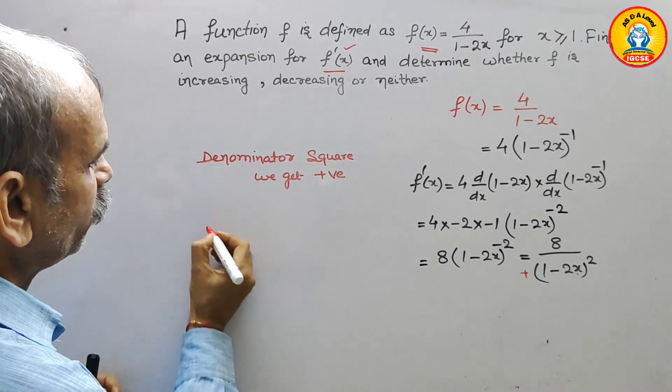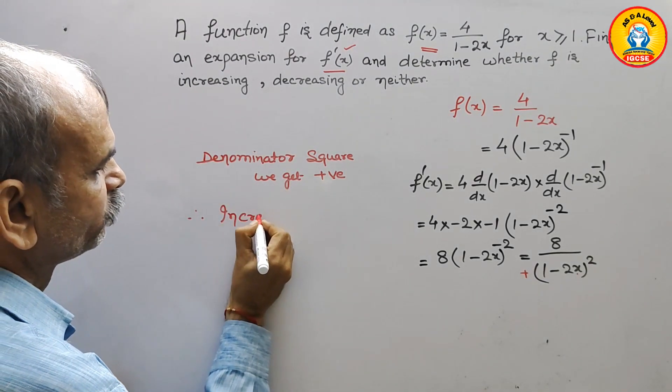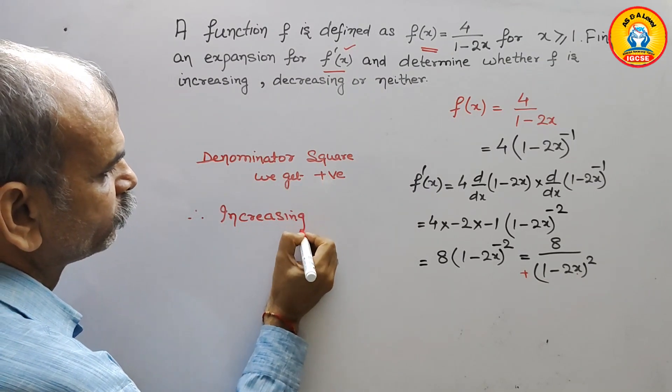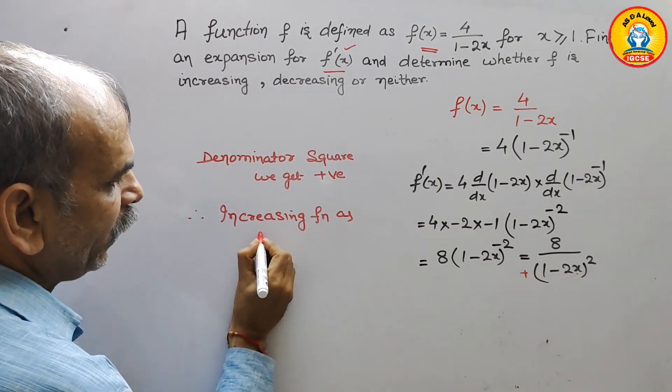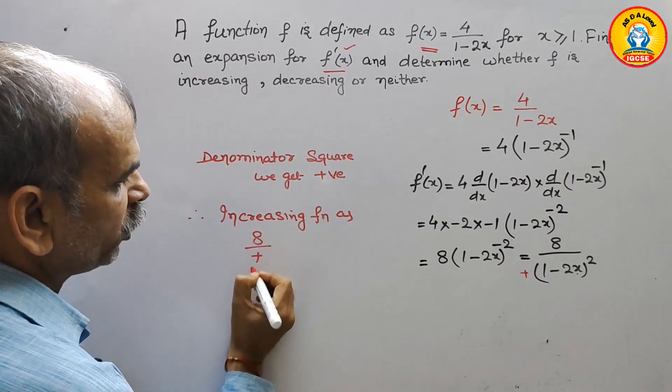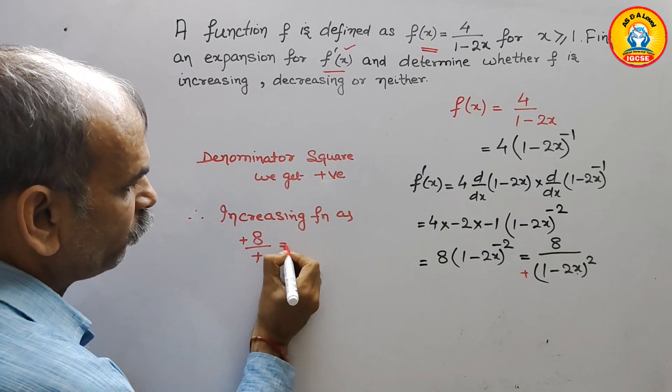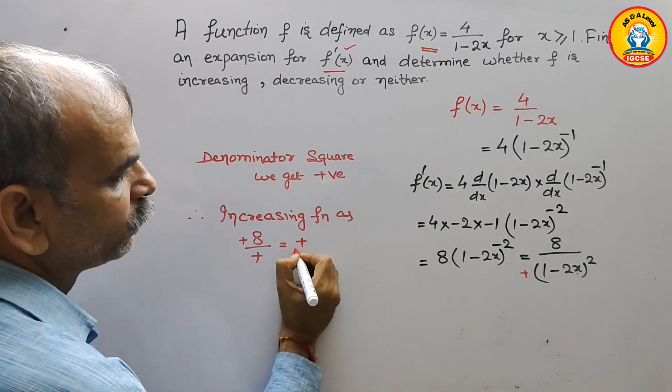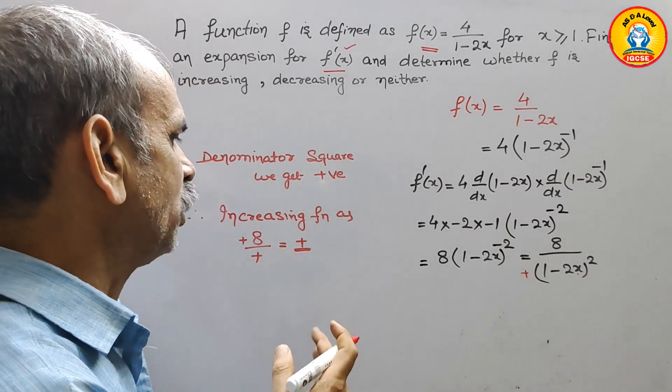So therefore we will get increasing function as 8 over positive. 8 is also positive, therefore we will get positive only. So like this we have to do it.